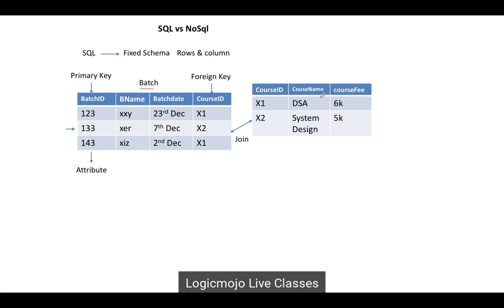Here we have another table — the 'course' table — which contains details of each individual course. The course ID is X1 and X2, where X1 is a DSA course with its corresponding price. This is the RDBMS where we have attributes, rows, primary key, foreign key, and joins to perform relations between multiple tables. And a very important topic: all relational database tables follow the ACID properties.